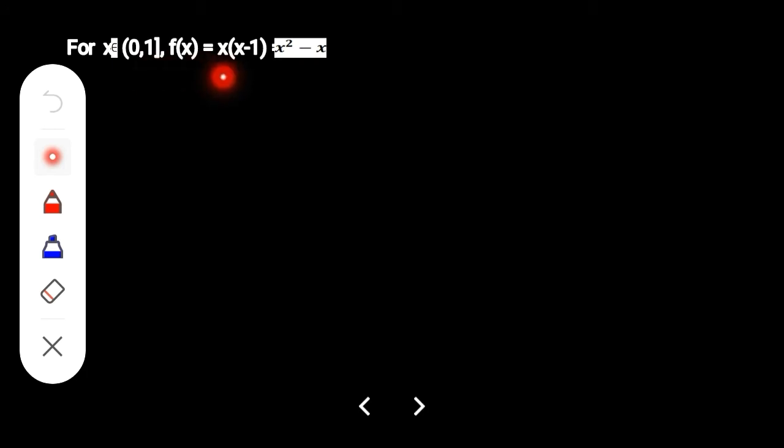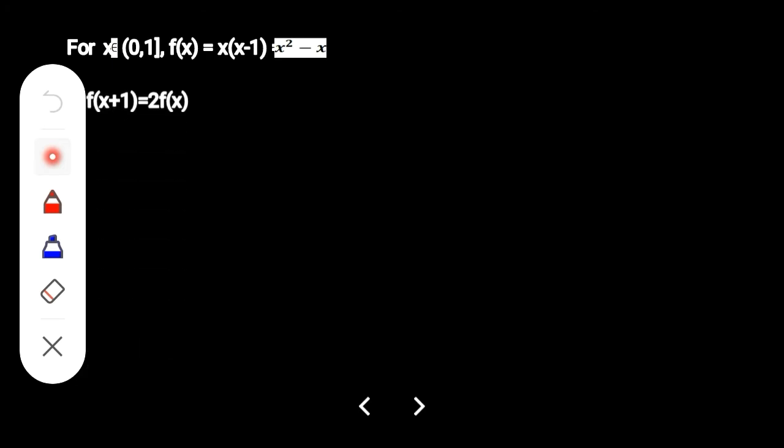The minimum value of the parabola occurs at x = 0.5. We get f(0.5) = −0.25. The other condition given is f(x+1) = 2·f(x), so the minimum value f(0.5) = −0.25.